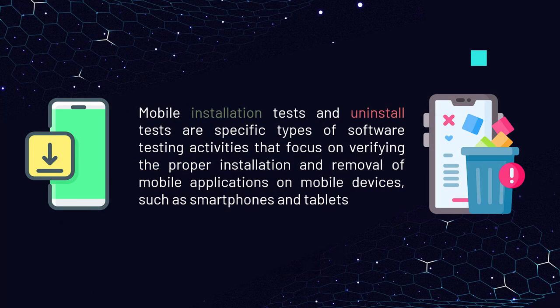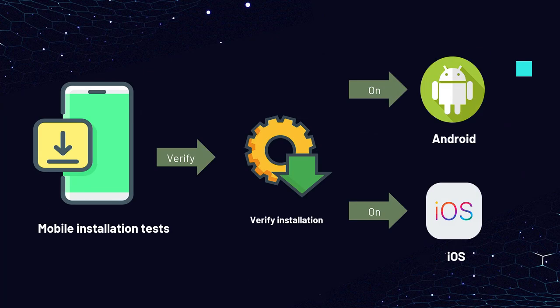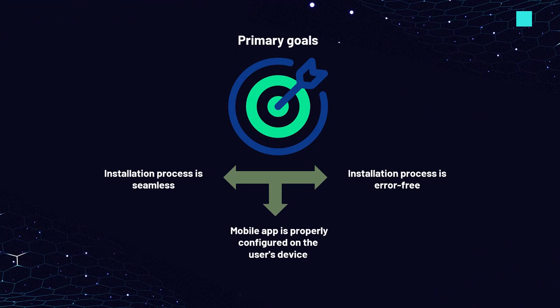Mobile installation tests and uninstall tests are specific types of software testing activities that focus on verifying the proper installation and removal of mobile applications on mobile devices such as smartphones and tablets. Mobile installation tests are conducted to verify that a mobile application can be successfully and correctly installed on various mobile devices and platforms including Android and iOS. The primary goal is to ensure that the installation process is seamless, error-free, and that the mobile app is properly configured on the user's device.